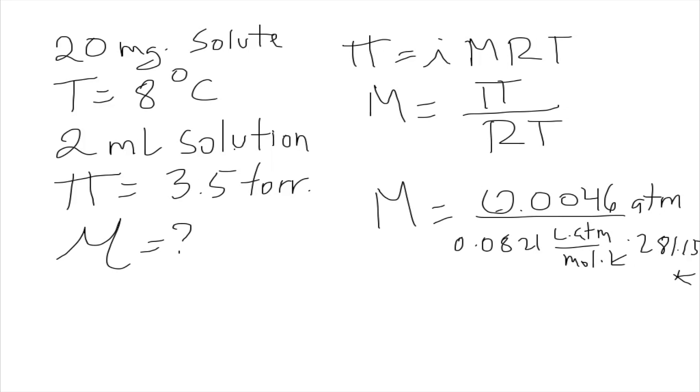Let's check our units. Kelvins cancel out. Atmospheres cancel out. We're going to get mols over liters because the order would change due to the division. The molarity is equal to 1.9 × 10^-4 mols over liters. So this was our first step.